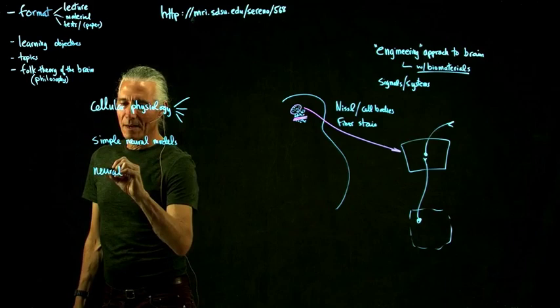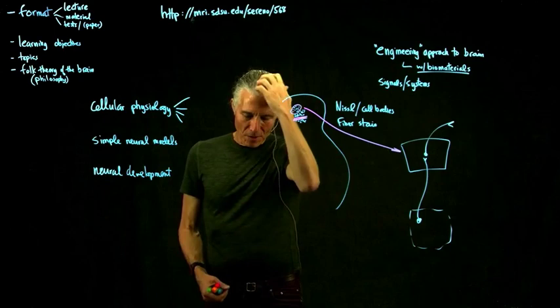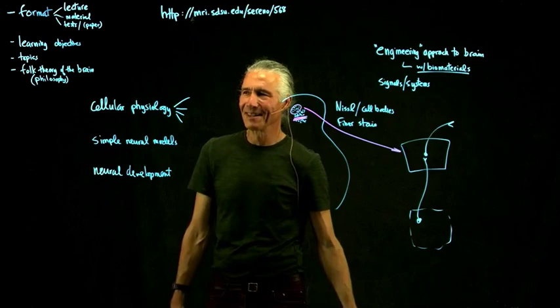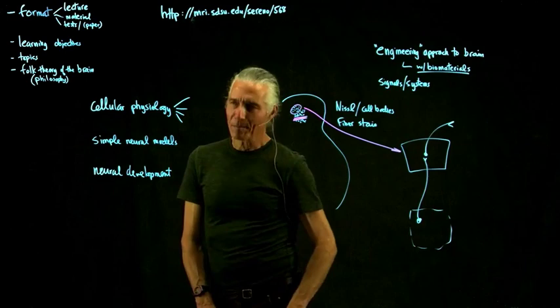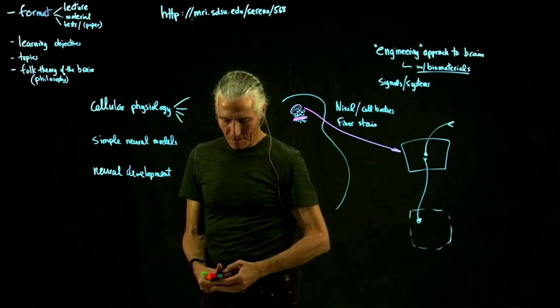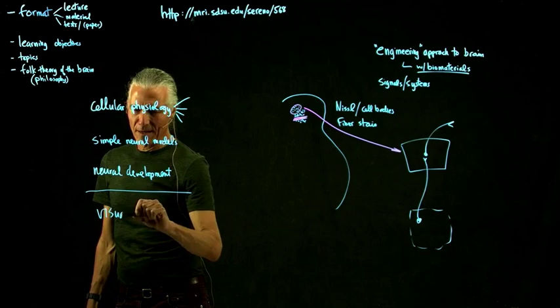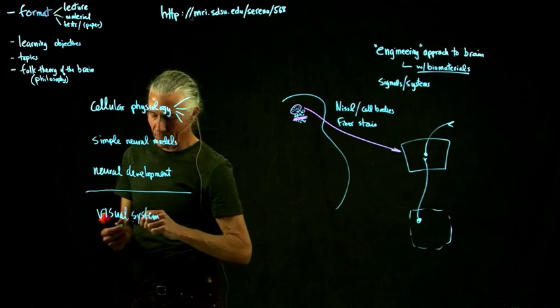Then we talk about neural development. This could easily be a whole other course, but we'll cover it in two lectures — main points. We start with the early embryo: how does the neural tube form, where are the main parts of the brain, how does it establish a coordinate system?